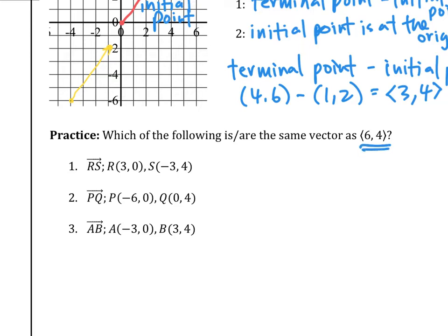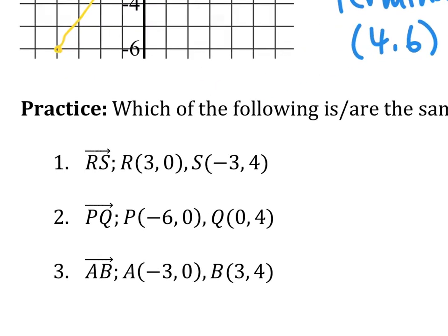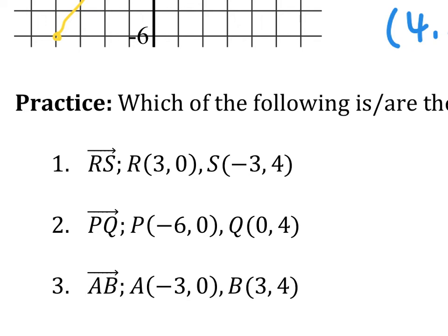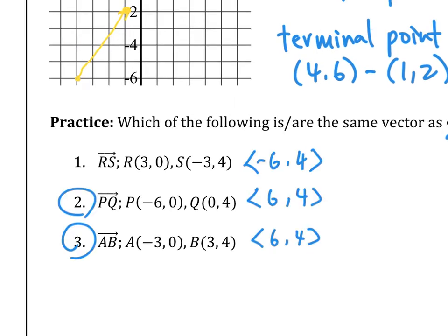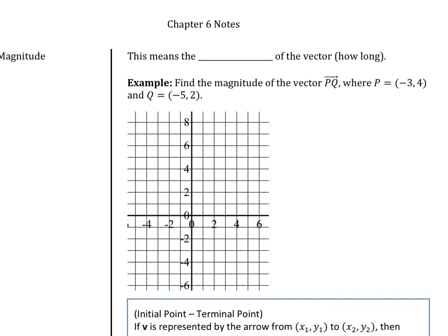Let's practice: which of the following are the same as vector ⟨6, 4⟩? This is in component form. Vectors are written with two points and an arrow on top — for a vector RS, R is the initial point and S is the terminal point. After converting to component form, options 2 and 3 have the same component form as ⟨6, 4⟩, so they are the same vectors.